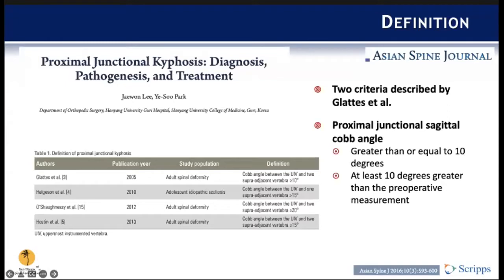This is a review article from the Asian Spine Journal published out of Korea in 2016. It shows that there are various definitions of PJK in the literature — this table shows four specific definitions. The most commonly accepted and most cited definition comes from the Glatz et al. paper in 2005: a proximal junctional sagittal Cobb angle greater than or equal to 10 degrees and at least 10 degrees greater than the preoperative measurement.